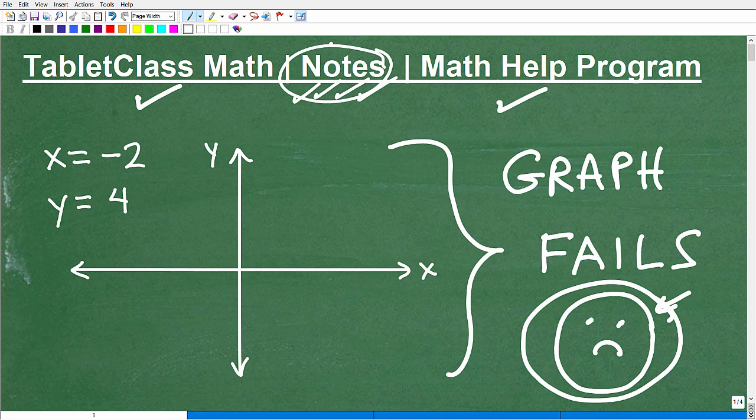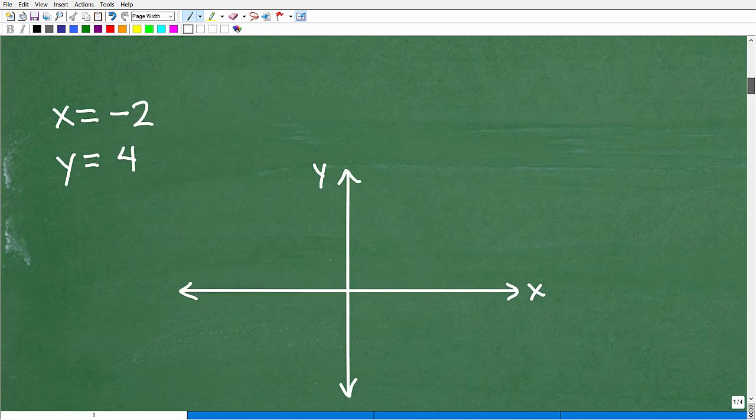Okay, so here is the situation. I have an XY coordinate plane, and I'd like to be able to graph these two lines. So I'm just wondering, do you think you can do this? If you're taking any kind of algebra course, pre-algebra or beyond, you need to know how to do this because these are the most basic lines that we graph. But let's kind of go down here, and we'll answer the question.